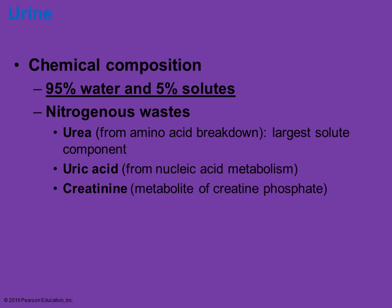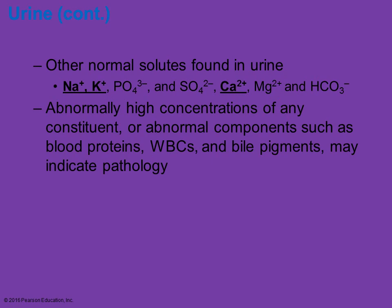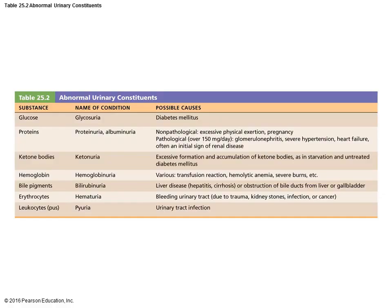Urine — the chemical composition: it's mostly water but does have some solutes in it. It's going to contain nitrogenous waste such as uric acid, urea, and creatine. Typically you will find some levels of sodium, potassium, and maybe calcium. If you have abnormally high levels, that's going to raise concern about what's going on. You should not have proteins, white blood cells, or bile pigmentation in urine — that would be more indicative of some disorder, disease, or infection. This table shows a list of different substances that would be abnormal in urine, the name of that condition, and some possible causes.